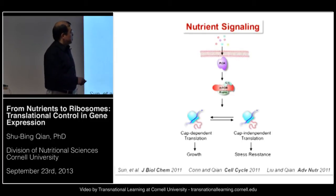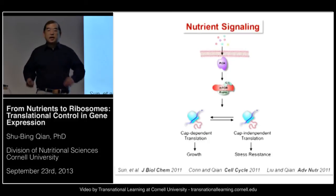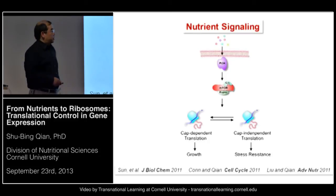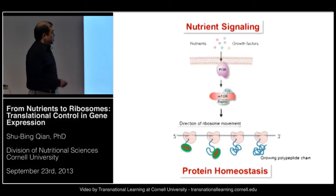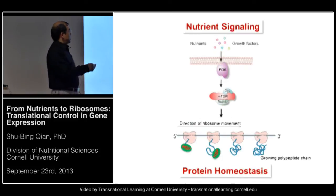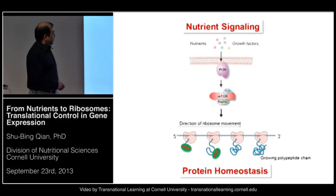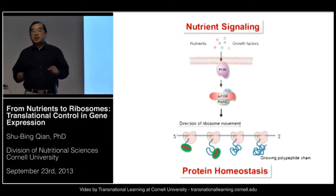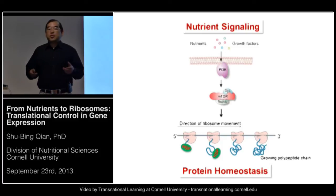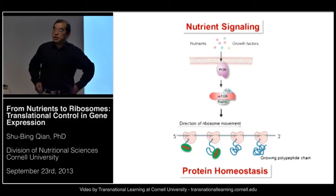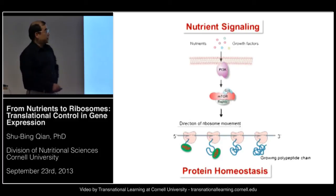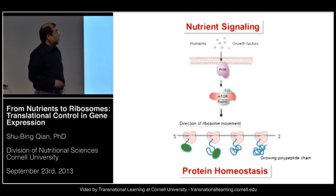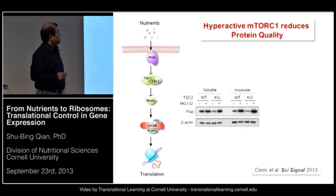Because the synthesis of chaperone molecules uses cap-independent mechanisms, we hypothesize that nutrient signaling controls the balance between cap-dependent and cap-independent translation. When we reduce cap-dependent translation, this is associated with increased cap-independent translation, and vice versa. We next became interested in whether this nutrient signaling also affects the elongation stage of translation.